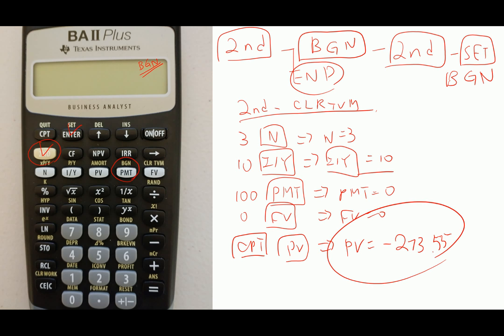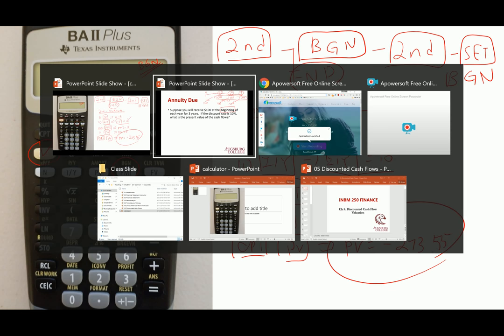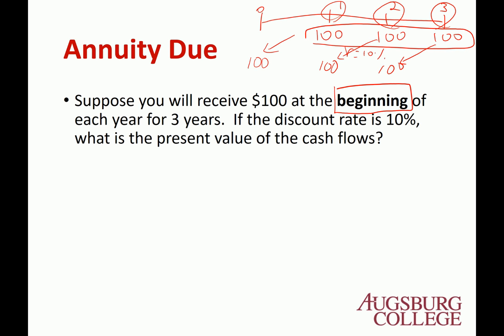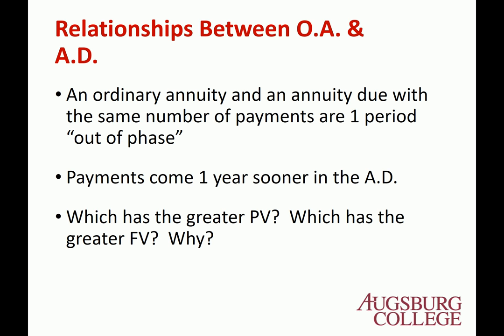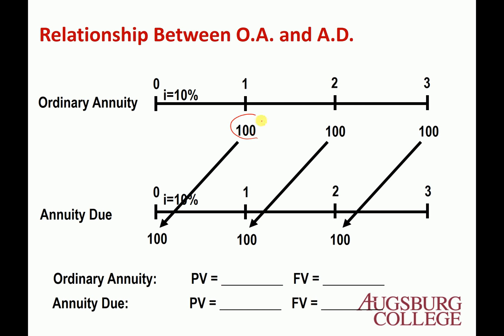So if you put $273.55 today and receive $100 from today for the next three years, then you make a 10% return. The cash flow is exactly the same as the Ordinary Annuity, same interest rate, but it occurs one year sooner.